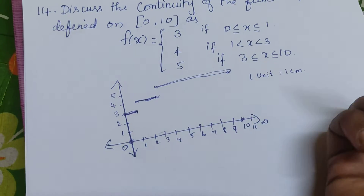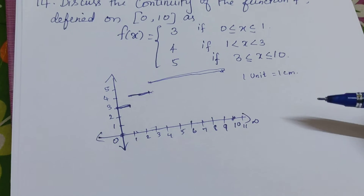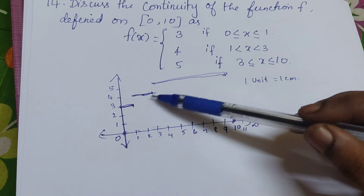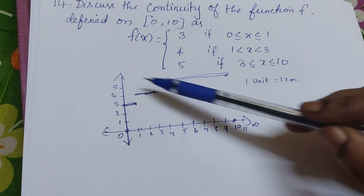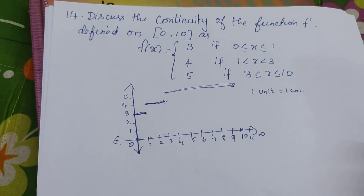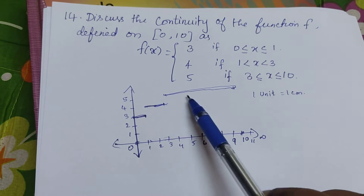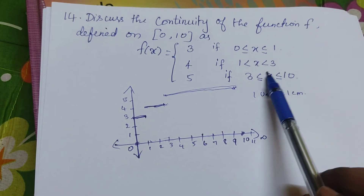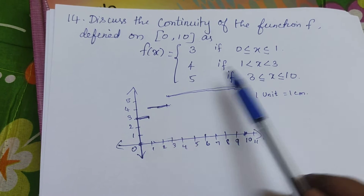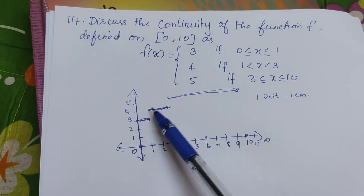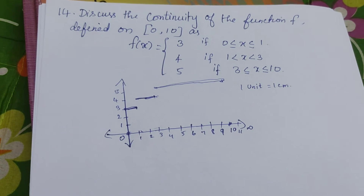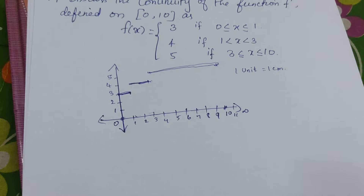From this geometrical representation itself we can say the function is discontinuous — we are lifting our pen while drawing the function. Within each piece the function is continuous, but it breaks at the particular points 1 and 3 only. We will now discuss the discontinuity at those points.